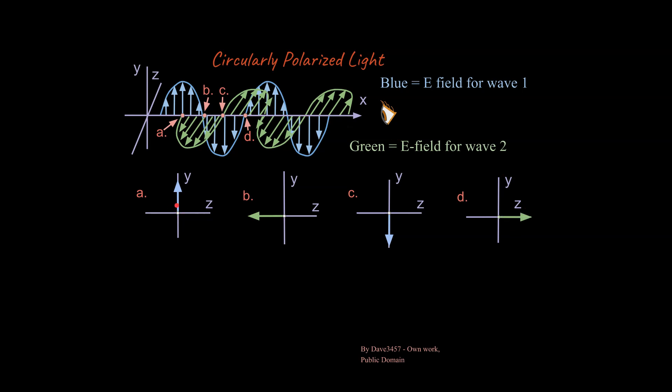Now I want you to think about what is happening as you go from A, B, C, and D in terms of the overall electric field that we see from the interference of these two electric fields. What is the trend that you notice here?